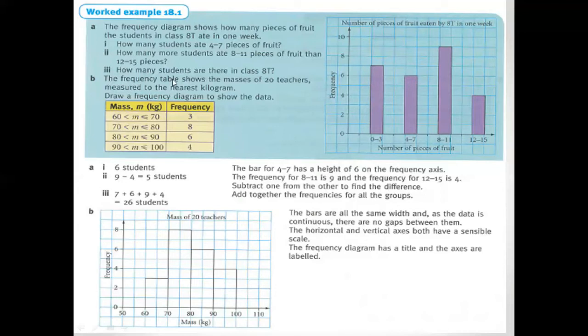Now Part B: frequency table shows the masses of 20 teachers measured to the nearest kilogram. Draw the frequency diagram to show the data. Here they give us a table, so with the help of this we will draw a discrete bar graph.